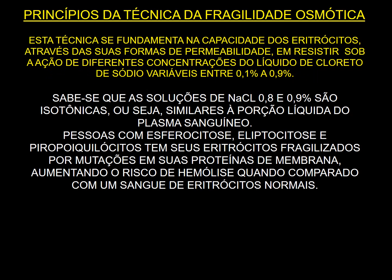As soluções de cloreto de sódio 0,8 e 0,9 são isotônicas, ou seja, similares à porção líquida do plasma sanguíneo. Pessoas com esferocitose, eliptocitose e piropoiquilocitose têm seus eritrócitos fragilizados por mutações em suas proteínas de membrana.